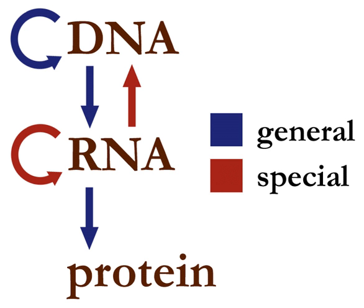Some proteins excise internal segments from their own peptide chains, splicing the free ends that border the gap. In such processes the inside, discarded sections are called intines. Other proteins must be split into multiple sections without splicing. Some polypeptide chains need to be cross-linked, and others must be attached to cofactors such as haem before they become functional.